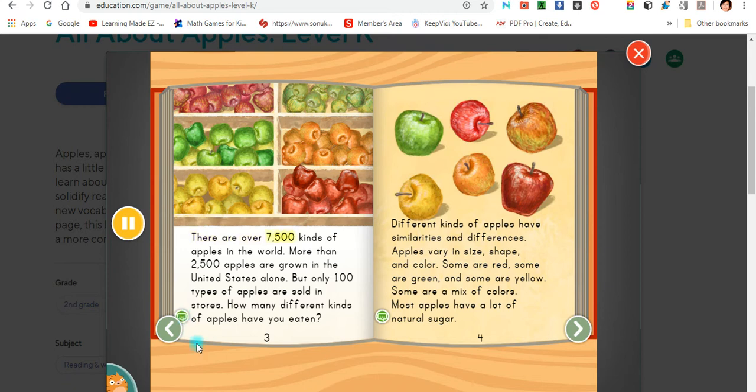There are over 7,500 kinds of apples in the world. More than 2,500 apples are grown in the United States alone. But only 100 types of apples are sold in stores. How many different kinds of apples have you eaten?